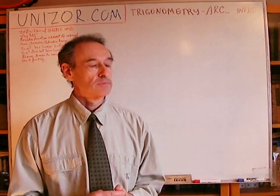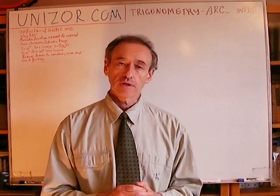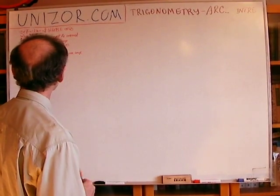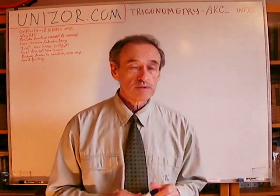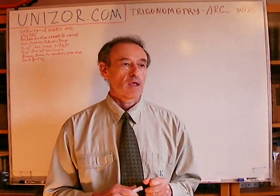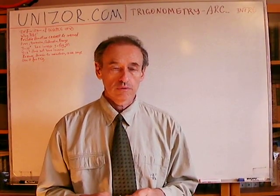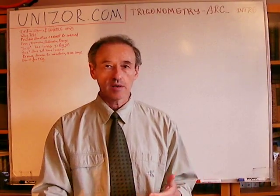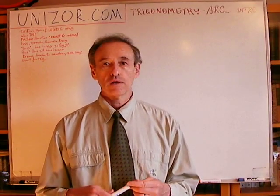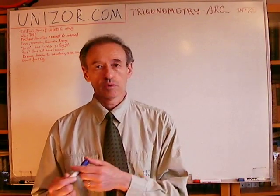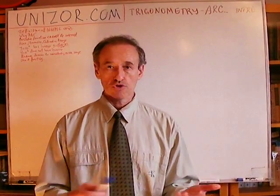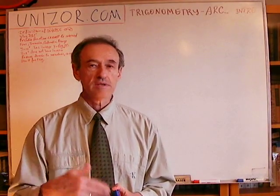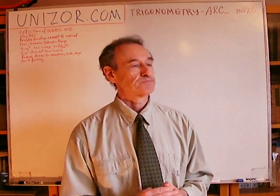Unfortunately, it's not simple with trigonometric functions. The most important problem is that they are periodic, which means the value of a function at some particular angle is exactly the same as at another angle. The simplest way is just to add 2π to an angle, and all trigonometric functions repeat their values after 2π.